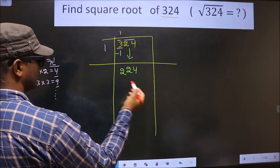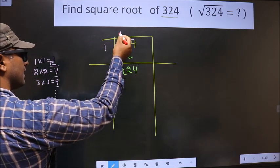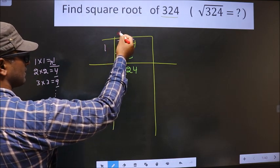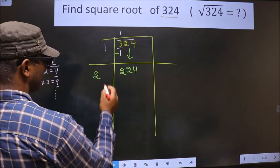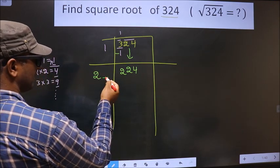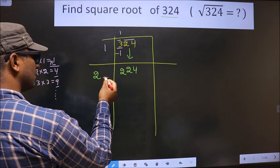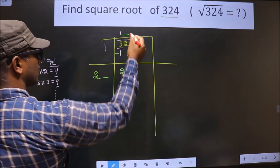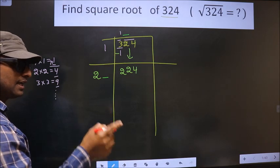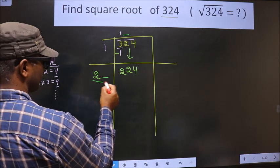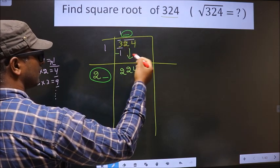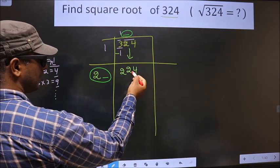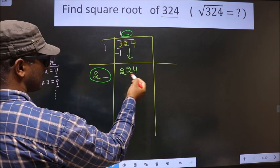Okay, now here. Here you should add these two numbers, that is 1 plus 1, we get 2. Now, here you need to write a number. Whatever number you write here, here also you should write the same number. And also, when you multiply this number and this number, the resulting number should be equal or smaller than this.